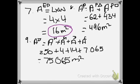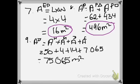Now for adding the properties together: the area of the triangular property plus the area of the rectangular property. The triangular property was 62 meters squared and the rectangular property was 434 meters squared. Add those two together and you get 496 meters squared.